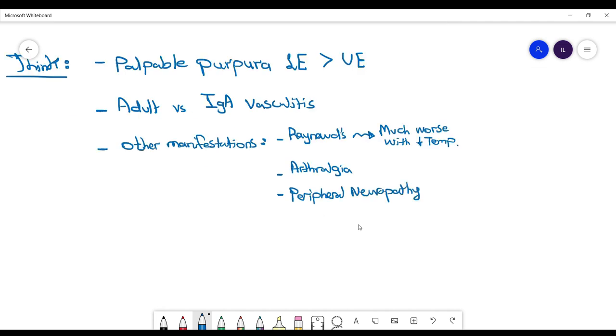Look for a history of a causative factor. The cause can be hepatitis C virus, present in around 85% of patients with cryoglobulinemia, as well as hepatitis B virus. History of IV drug use, SLE, and cancer can also cause cryoglobulins to be elevated.